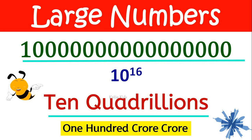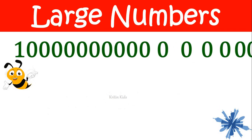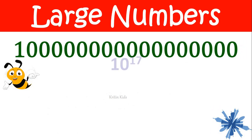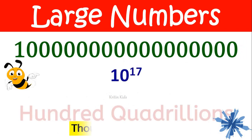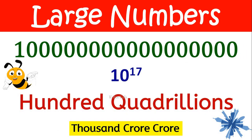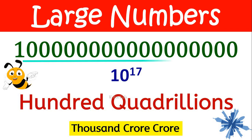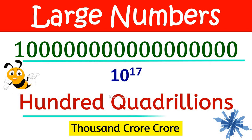Then if I add one more zero, it becomes one hundred quadrillion, that is one thousand crore crore. One followed by seventeen zeros gives us one hundred quadrillion.